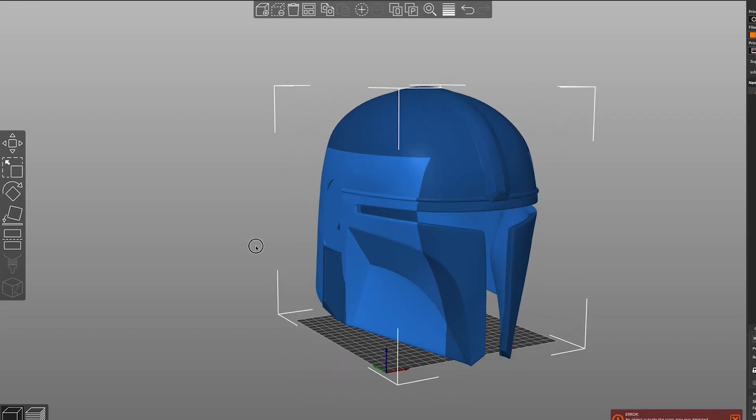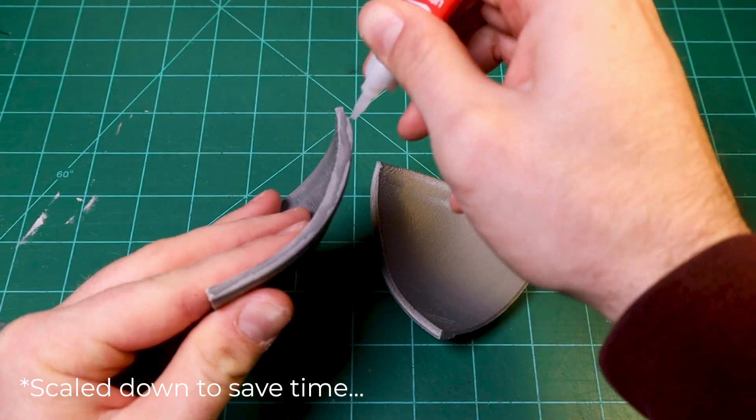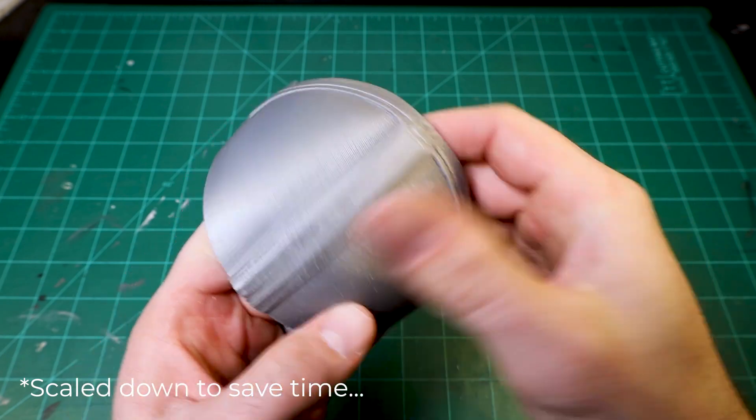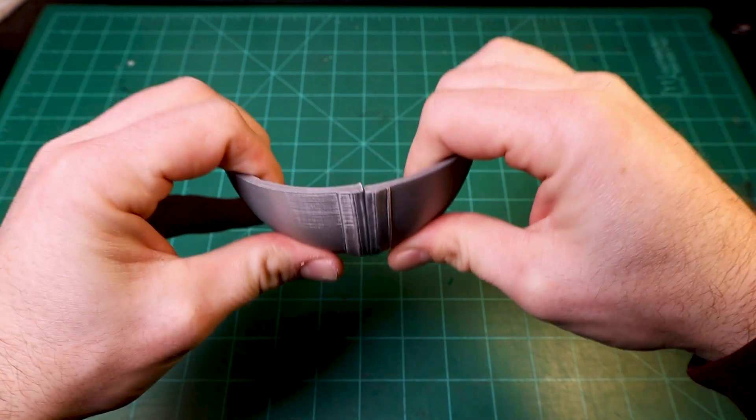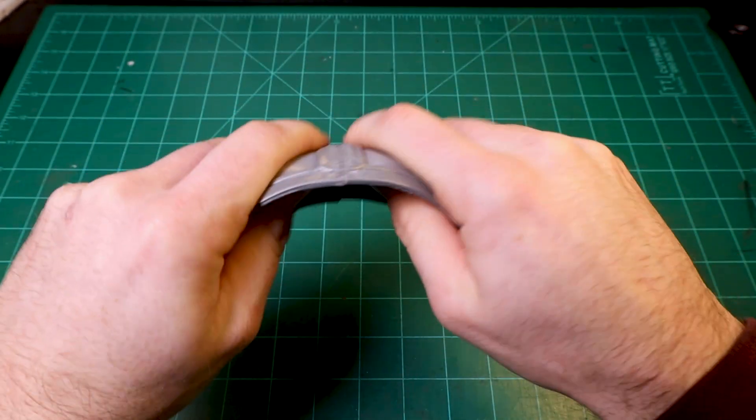Another pro of adhesives is that many of them can be sanded along with the printed parts. If, for example, you're a cosplayer and you want to print a helmet that doesn't fit on your print bed, you can easily sand down any of the seams so that they're hardly noticeable. As far as cons go, with the exception of maybe hot glue, adhesives are fairly permanent, so if your parts need to be separable, you'll need to use one of the other methods in this video.